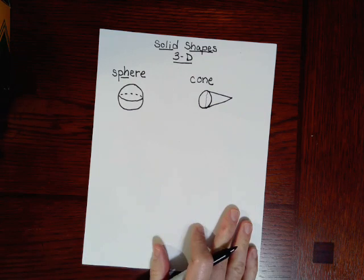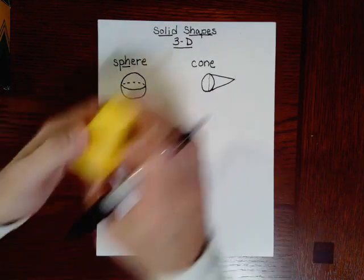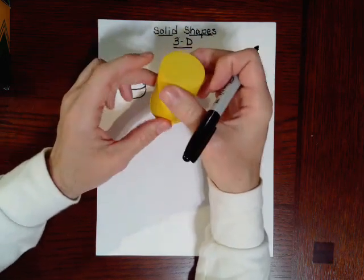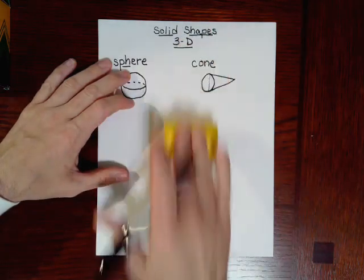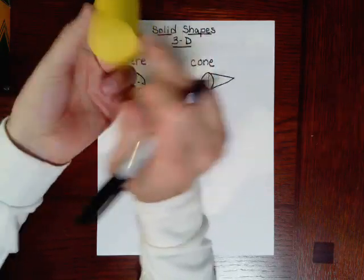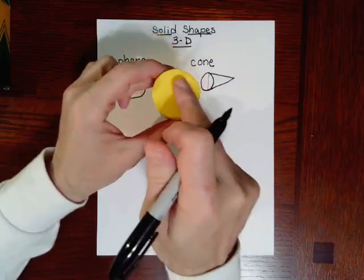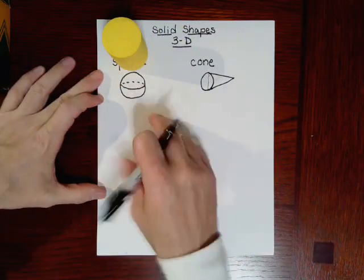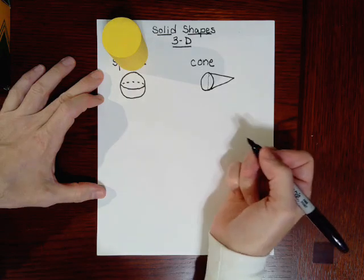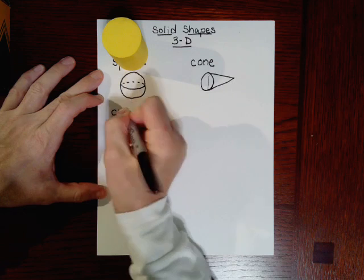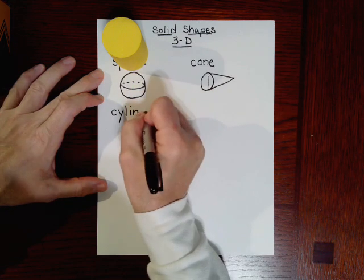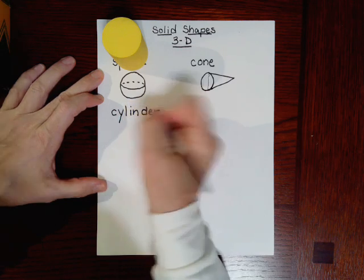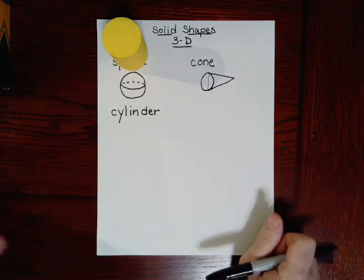Okay, so we did sphere and cone. Let's do another solid shape. This is called a cylinder. Now the interesting thing about a cylinder is it has a curved surface, see how it rolls, it's curved, and it has two flat surfaces, two sides that are flat. So we're going to write, find a space on your paper, let's write cylinder. This is a longer word so it's C-Y-L-I-N-D-E-R, cylinder. Now to draw the cylinder there's a lot of parts to it.